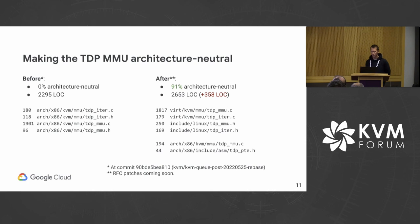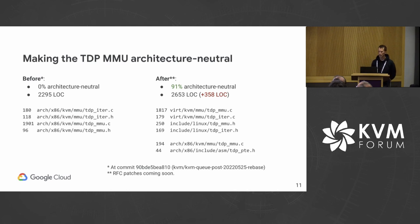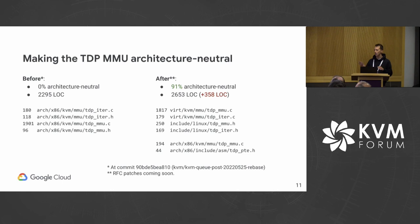I've worked on this internally. The RFC patches will probably be posted in a couple of weeks, but it is possible. We go from having about 2,300 lines of code in the x86 directory to about 91% of that being able to move to the architecture-neutral virt/kvm directory.